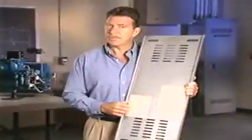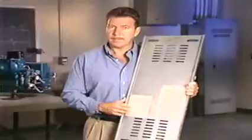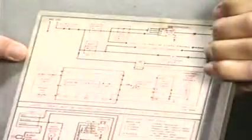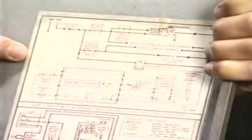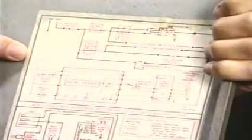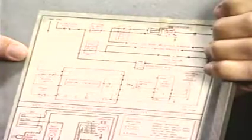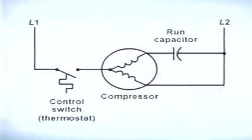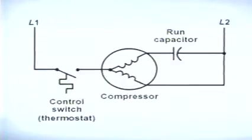Of all the electric diagram types, the schematic diagram is the most useful and easiest to follow. It tells you how, when, and why a system works. The schematic diagram includes the symbols and line representations so that the user can easily identify loads and switches in any given circuit.